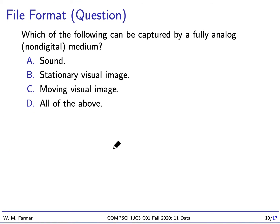I have another question for you. This is a question about analog mediums, fully analog mediums. An analog medium is really the opposite of a digital medium. An analog medium is something that's stored without numbers. The question is, which of the following can be captured by a fully analog medium? And your choices are sound, stationary visual image, moving visual image, or all of the above. I'll give you a moment to think about that. Okay, welcome back. The answer is this, all of the above.